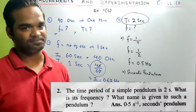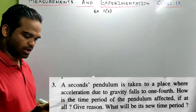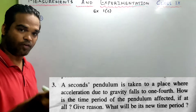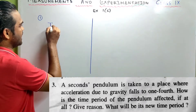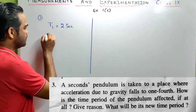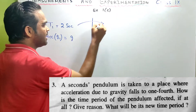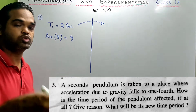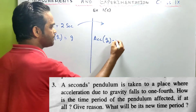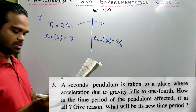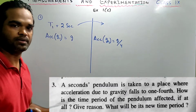Now look at sum number 3. A seconds pendulum is taken to a place where acceleration due to gravity falls to 1/4. You have a seconds pendulum, which means the time period is 2 seconds. Suppose G1 = G. Then at the second place, G2 becomes G/4. They've asked how the time period is affected and what will be its new time period.